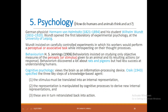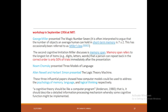Cognitive psychology works on three different stages. First, the external stimulus must be translated into an internal representation. Second, this internal representation is manipulated by cognitive processes to derive a new internal representation. Finally, these internal representations should be retranslated back into action.